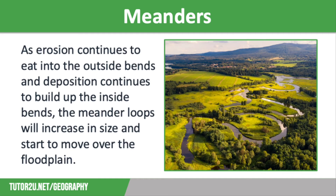As erosion continues to eat into the outside bends and deposition continues to build up on the inside bends, the meander loops will increase in size and start to move over the floodplain. Rivers with many meander loops are called sinuous rivers, like the one in the photograph on the screen.